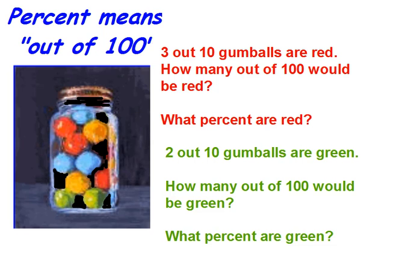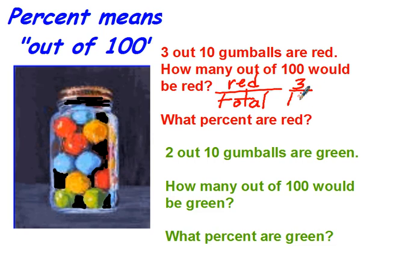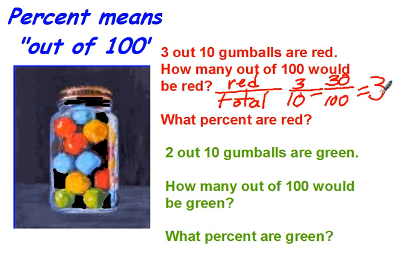If we say 3 out of 10 in this jar are red, we would say red gumballs to total gumballs. You can always set up a ratio and or a proportion here — red to total. We would say 3 out of 10 is what we know, but we want to know how many out of 100. Your knowledge of equivalent fractions — times 10 here, so times 10 here — gives you 30 out of 100, which is the same as 30%.